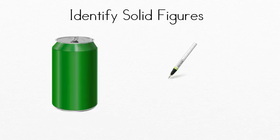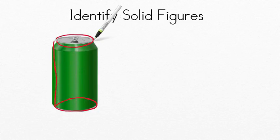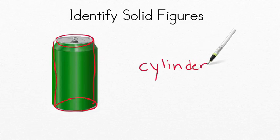Now how about the soda can? What shape is it? Notice it's got a circular top, bottom, rounded sides. What shape would that be? If you said cylinder, pat yourself on the back. This is indeed a cylinder. Great work.